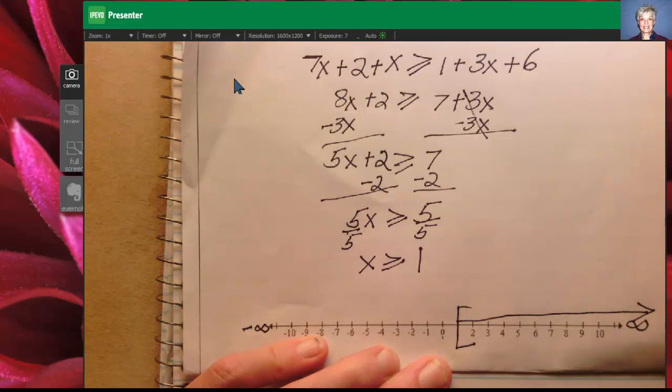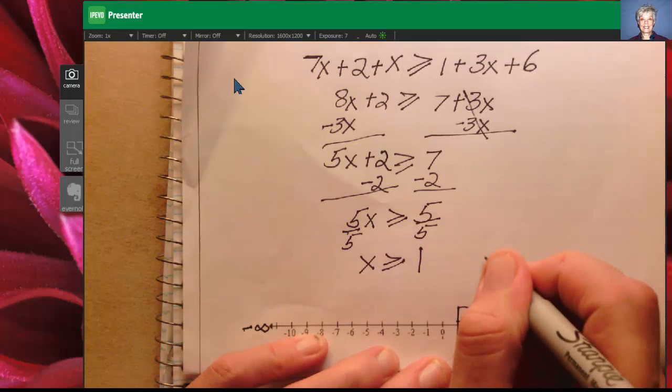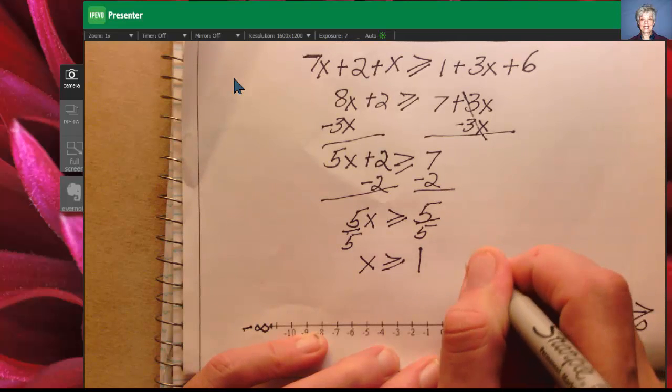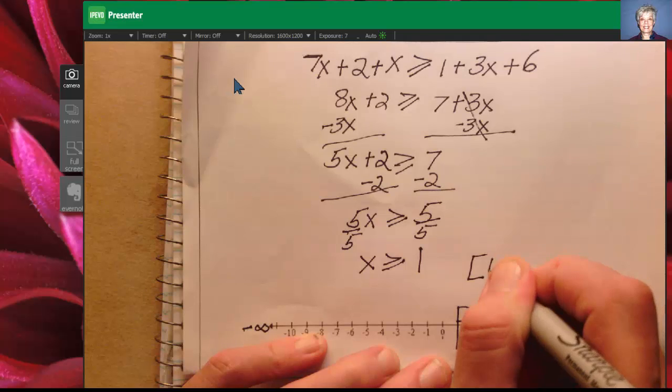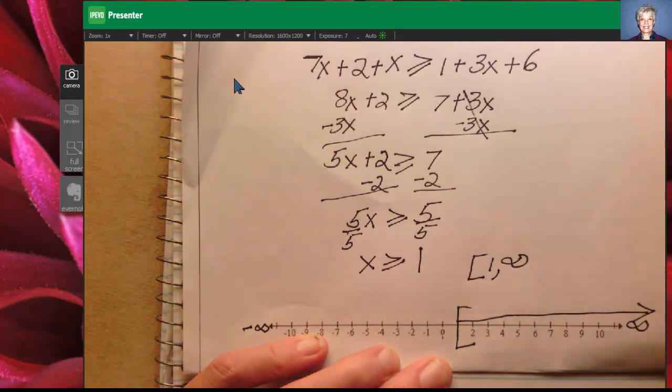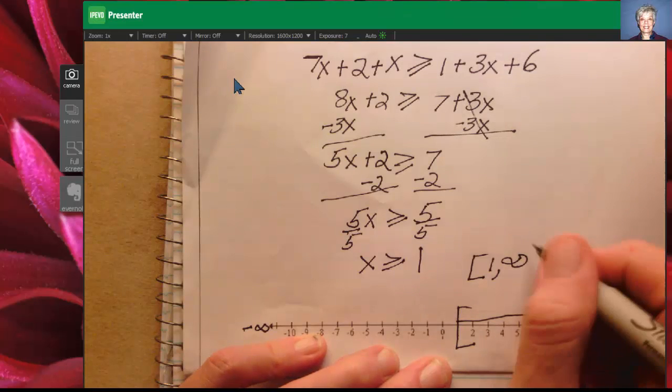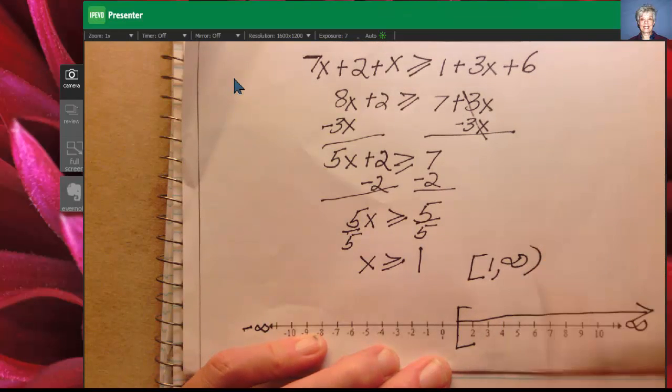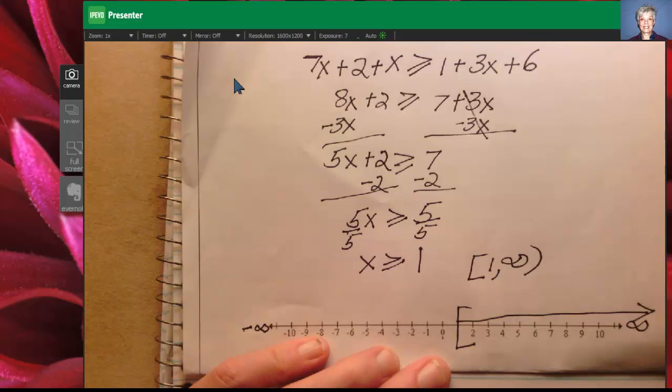My interval notation is going to be very similar to my graph. So the interval notation is going to be bracket 1, parenthesis infinity. Now infinity always takes a parenthesis. And there you go. We're done. We did it.